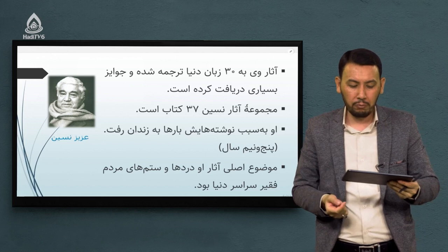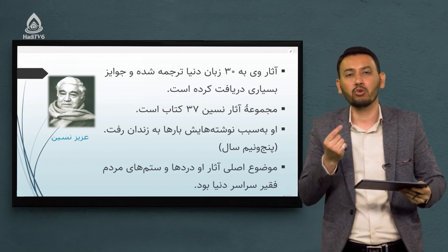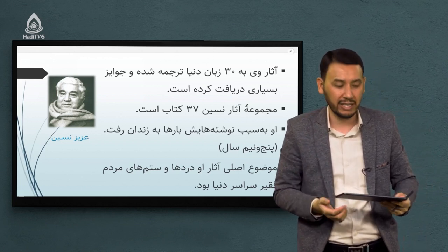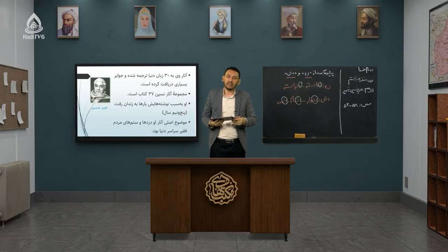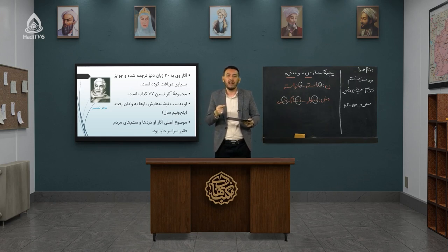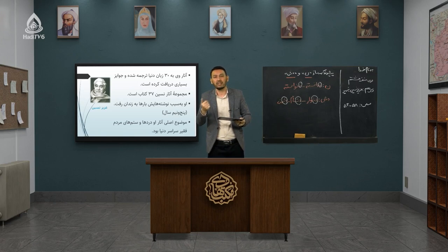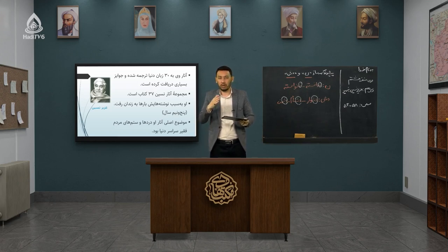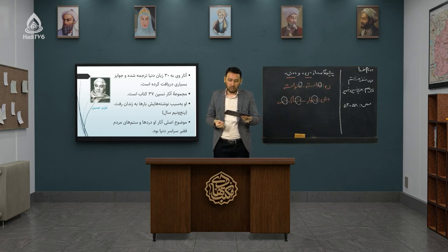او به سبب نوشته‌هایش بارها به زندان افتاد. نزدیک پنج و نیم سال از عمر خود را در زندان سپری کرد. عزیز نسین هدف و نوک پیکان انتقاداتش در حوزه نگارش، مختص حکومت‌های مختلف بود، خاصه حکومت ترکیه در آن دوره. همواره حکومت را مورد تمسخر و طنز قرار میداد و قلم برنده و تیزی داشت که باعث شد بارها وارد زندان شود.